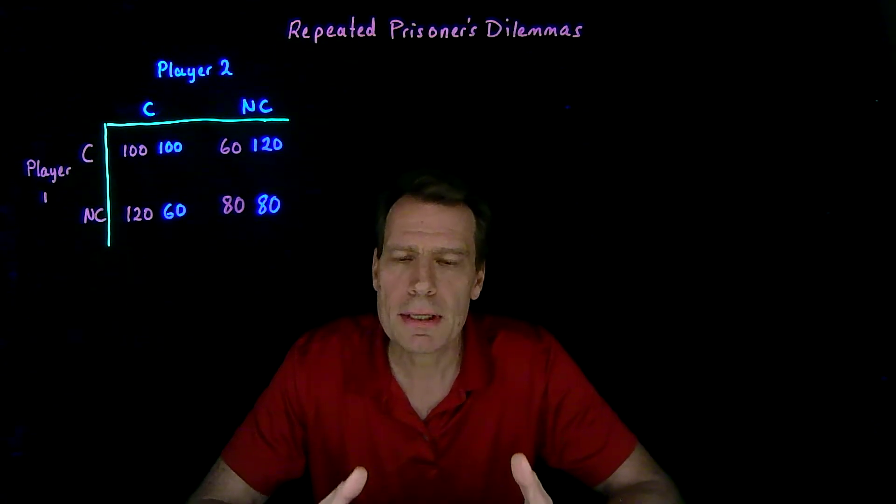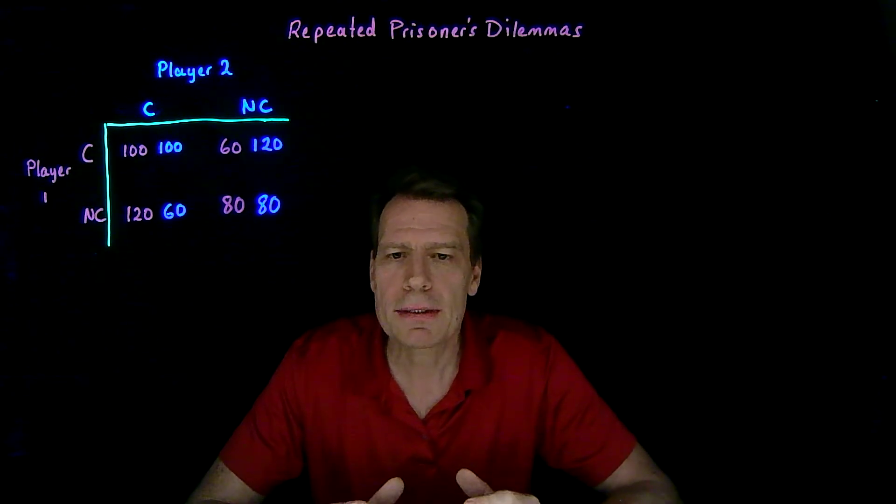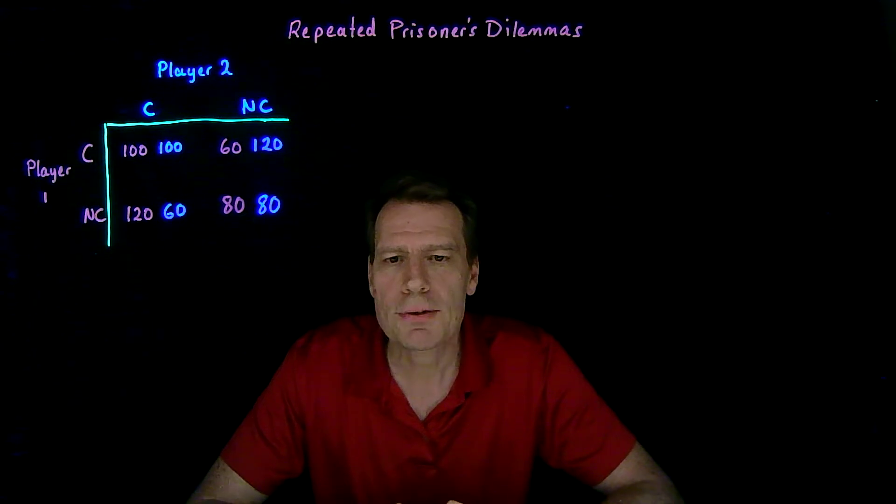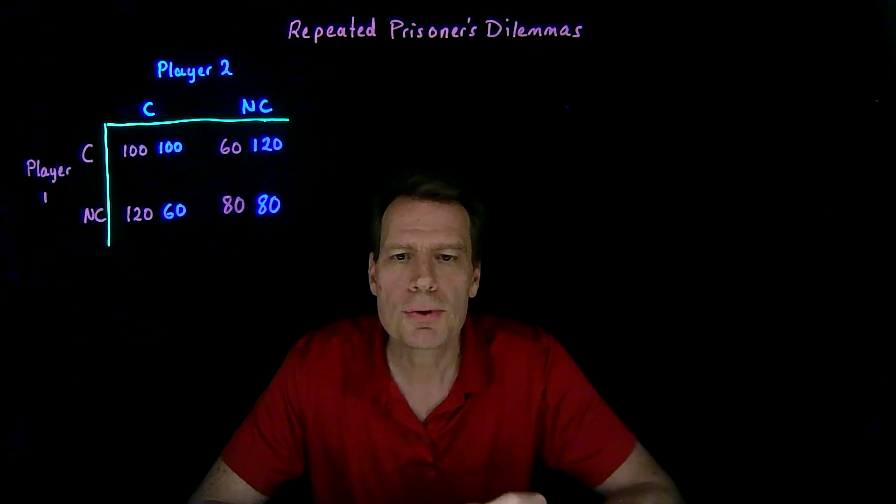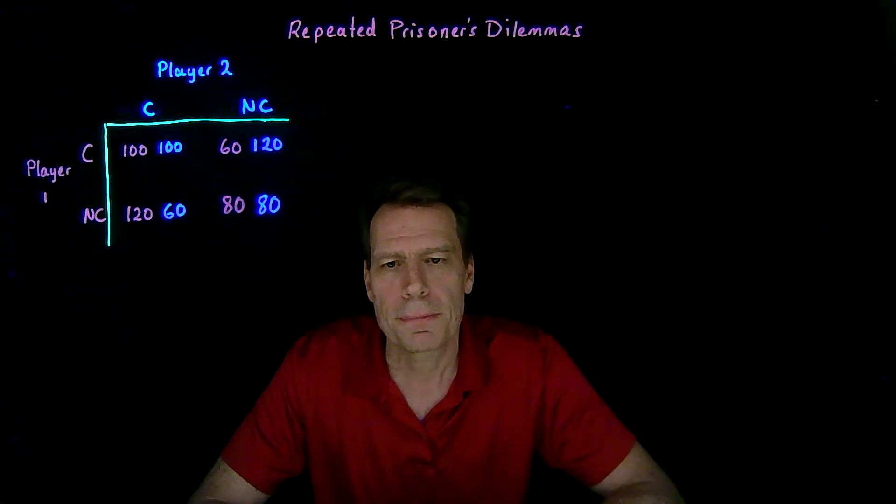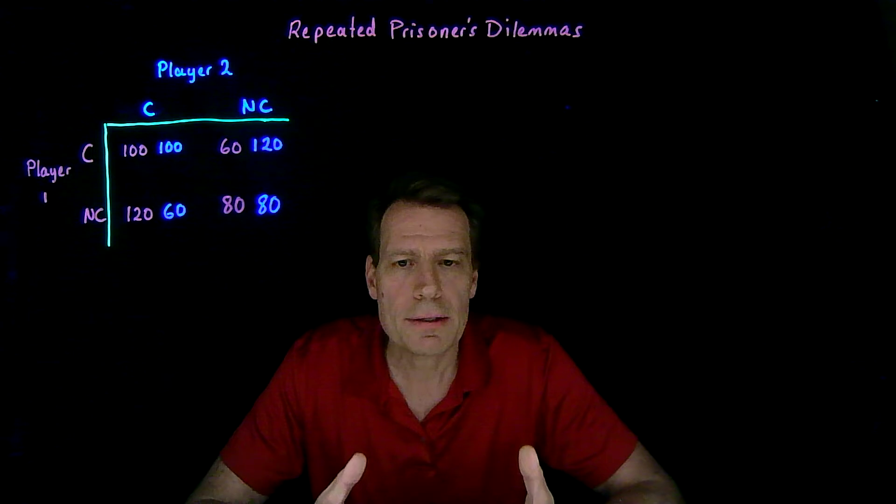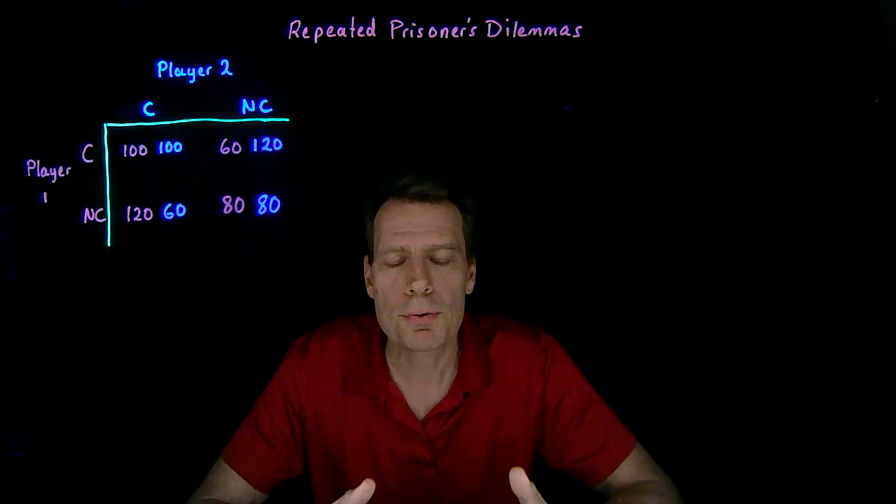We've seen that in the Prisoner's Dilemma, both players have a dominant strategy, a strategy that's the best response to anything the other player might do. And that dominant strategy is to not cooperate. As a result, there's only a single Nash equilibrium. It's the Nash equilibrium where both players play their dominant strategy.